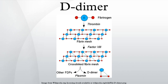D-dimers are not normally present in human blood plasma, except when the coagulation system has been activated, for instance because of the presence of thrombosis or disseminated intravascular coagulation. The D-dimer assay depends on the binding of a monoclonal antibody to a particular epitope on the D-dimer fragment. Several detection kits are commercially available, and all of them rely on a different monoclonal antibody against D-dimer.